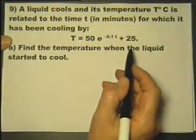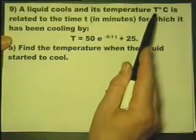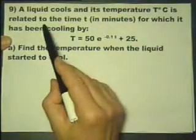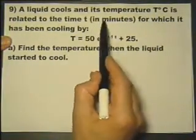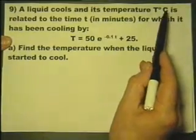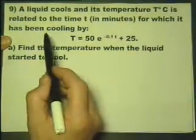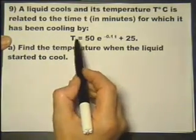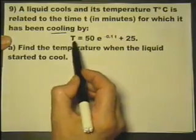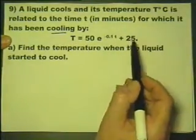We've got that a liquid cools, and its temperature, big T, is related to time, little t, which is measured in minutes, and the temperature is measured in degrees centigrade. Time for which it's been cooling is given by this equation.